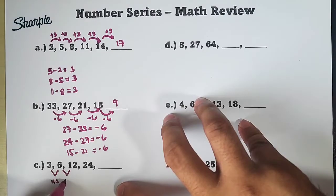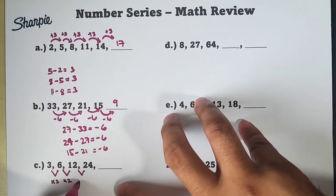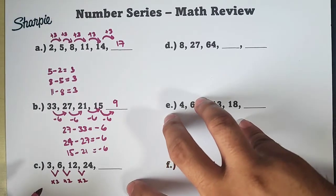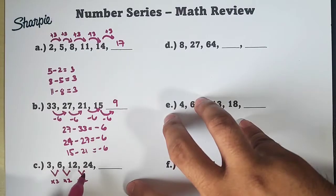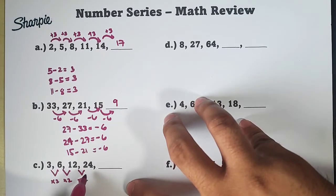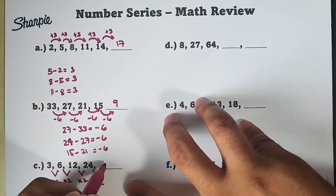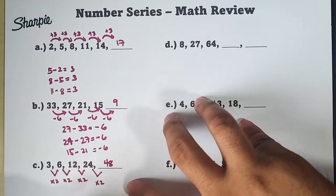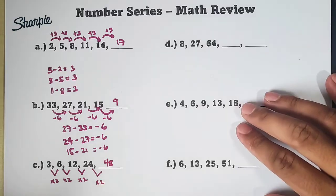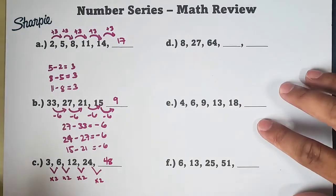Times 2, times 2, then times 2. Ibig sabihin, yung next term natin, guys, for this pattern is 24 times 2, and the answer is 48. Ganun yung pattern natin dito. Now, let's move on with letter D.